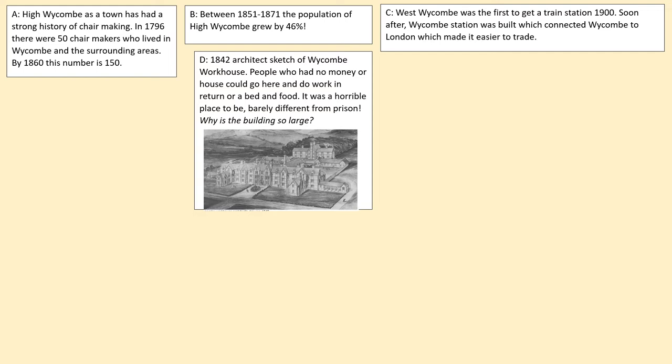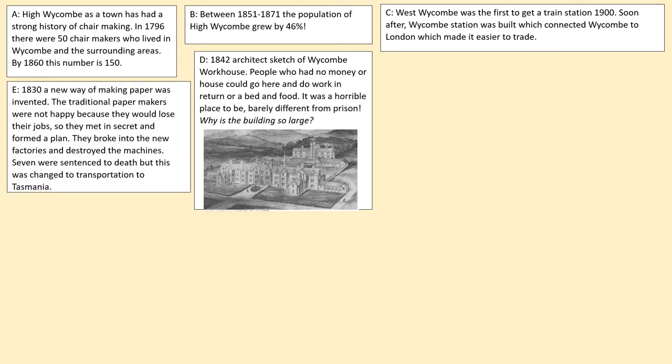The workhouse sounds quite nice, but actually it's horrible — it's basically a prison. You're not allowed to leave, and people literally died while working. The building is massive, so think about what that tells you about poverty in High Wycombe. Source E: In 1830, a new way of making paper was invented. The traditional paper makers were not happy because they would lose their jobs, so they met in secret and formed a plan. They broke into the new factories and destroyed the machines. Seven were sentenced to death, but this was changed to transportation to Tasmania.